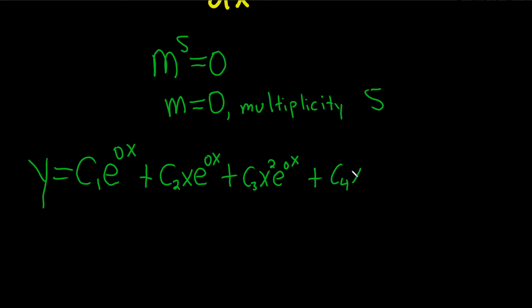So four would be x cubed e to the zero x, and then multiplicity five would be c sub five x to the fourth e to the zero x.